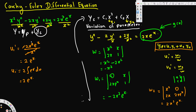Next, u₂′ = W₂/W = 2x³e^x / (−x²) = −2xe^x. To find u₂ we need to integrate −2xe^x, which requires integration by parts.